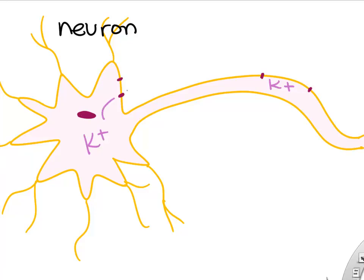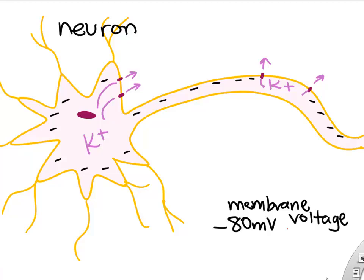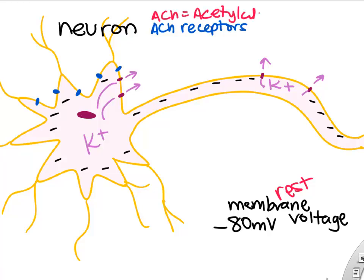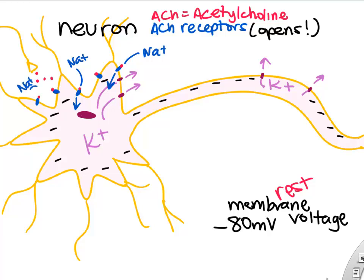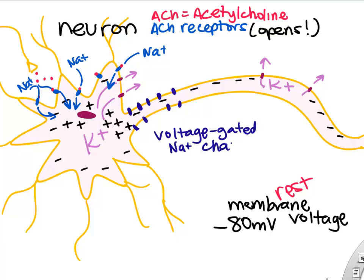We have a lot of potassium in our neurons. A little bit leaves through potassium channels, giving a slightly negative charge inside at rest — we call this membrane potential or membrane voltage. If you release acetylcholine from another neuron and it binds to acetylcholine receptors, they open up allowing sodium to rush in. Sodium is positive, so the inside of the cell starts to become positive locally. If it becomes positive enough, it can trigger voltage-gated sodium channels in the axon, producing an action potential.